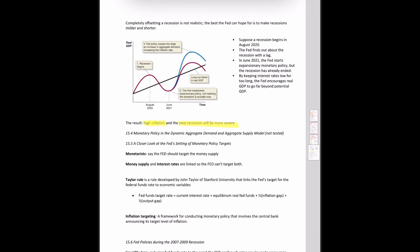Slide 34 has a really good diagram for understanding monetary policy — expansionary and contractionary — and talks about the steps as far as what happens without monetary policy. Fiscal policy is covered in the next chapter.